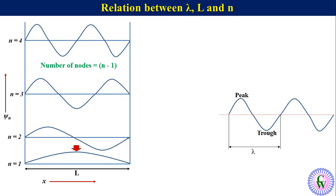For n equals 1, there is only one peak. So in this case, L will be equal to half of wavelength.